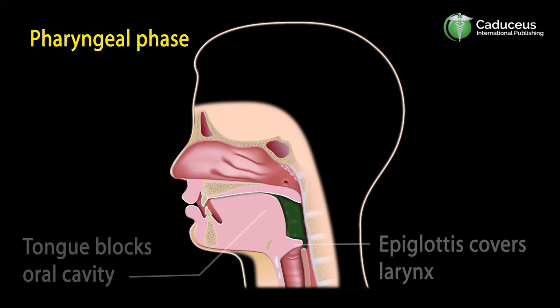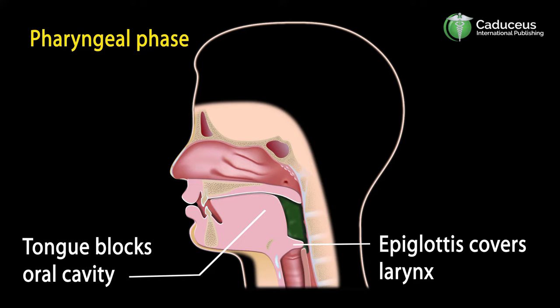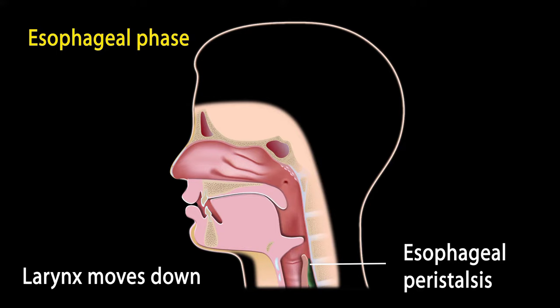Solid substances like food and water trigger an automatic response where this structure moves downward to cover the opening to the larynx. If you have inflammation of the cords within the voice box, it's referred to as corditis.